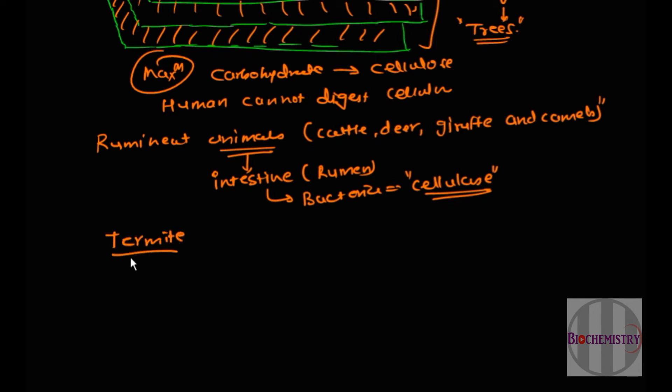Termites also achieved a similar mechanism. Their intestine also contains such bacteria which can secrete cellulase. These bacteria are very useful to ruminant animals and termites because they secrete cellulase, and thanks to cellulase which is of bacterial origin, they can get their energy from woods.